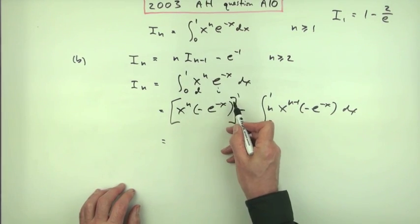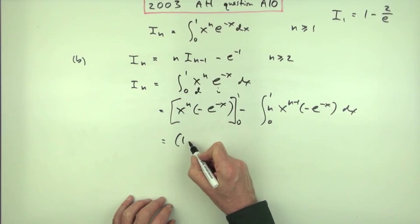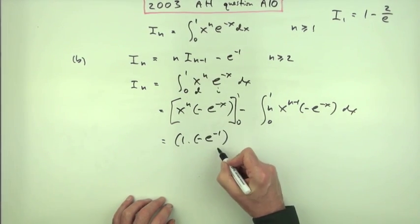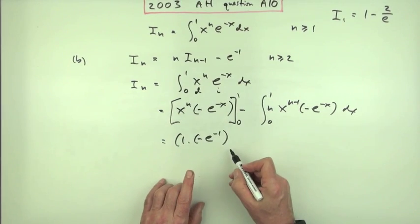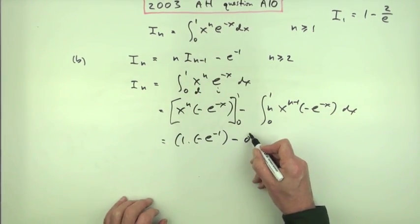Well, that's ready to evaluate. So when x is 1, 1 to the n thing is 1, times negative e to the negative 1. Too many negatives to my liking there. Minus, and then handily, when x is 0, the whole thing's just going to be 0.